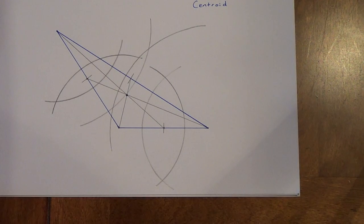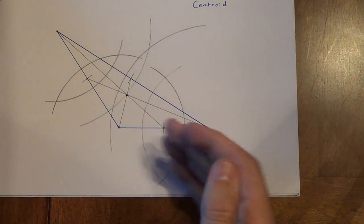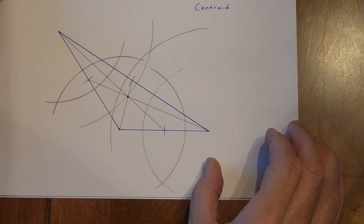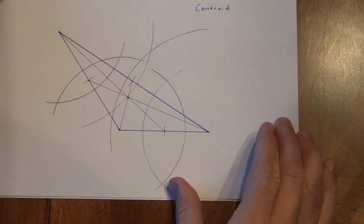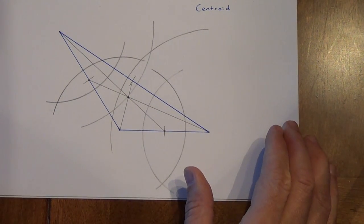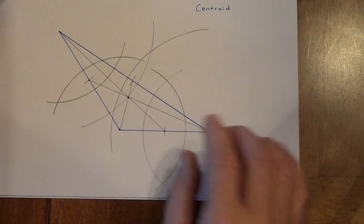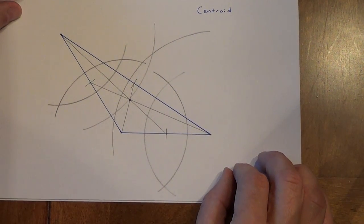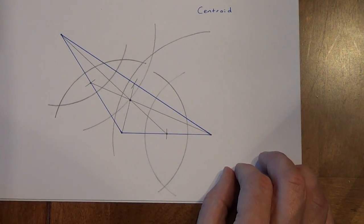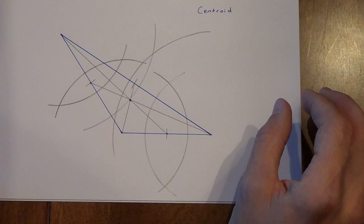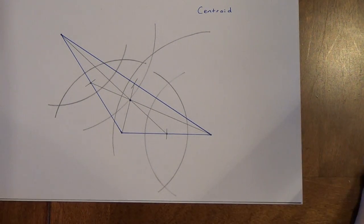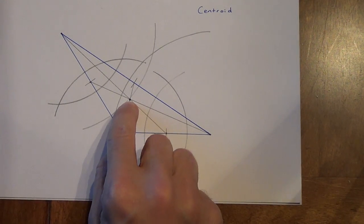Now you'll notice that even though I had an obtuse triangle, the centroid was inside the triangle. It doesn't matter what kind of triangle you have. Obtuse, acute, right, centroid is always inside the triangle. Unlike what we saw with a circumcenter, if you've already watched that video. If you haven't watched that video yet, you'll notice that on a circumcenter, the circumcenter may be inside or outside a triangle depending on what kind of triangle we have. So, centroid always inside a triangle.